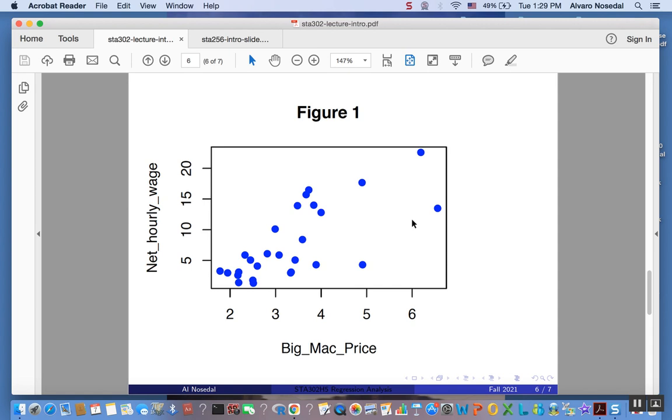The statistical questions you will be able to answer after taking this course are: a. Is there a relationship between the price of a Big Mac and the net hourly wages of workers around the world? If so, how strong is this relationship?